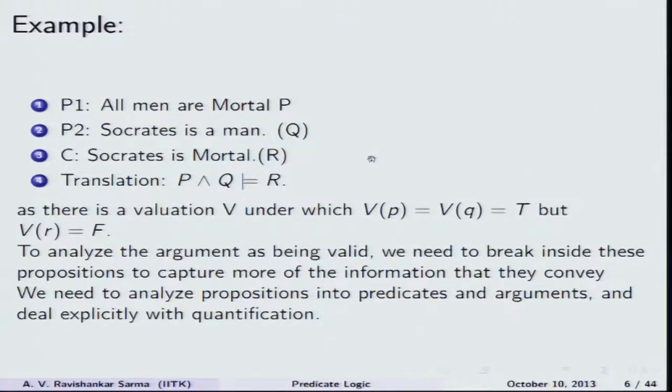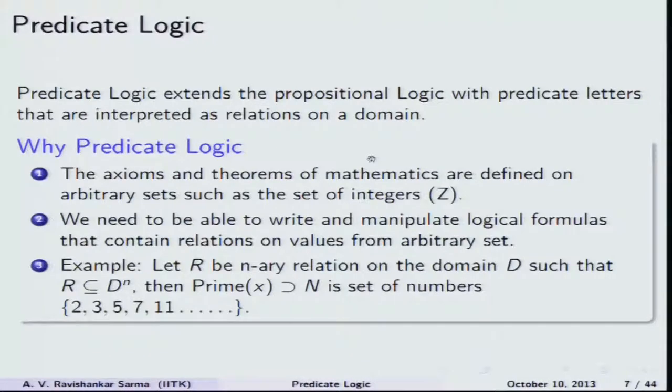We also need to analyze propositions into predicates and arguments, and deal with quantification. In 'all men are mortal,' mortality is attributed to all human beings. Socrates is a human being, and there exists some X such that X is considered to be mortal. The first sentence is represented with the universal quantifier, and the next two sentences involve existential quantifiers. Apart from simple logical connectives, we need quantifiers, and predicate logic extends propositional logic with predicate letters P, Q, R, etc., interpreted as relations on a particular domain.